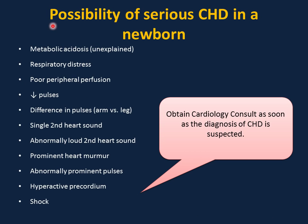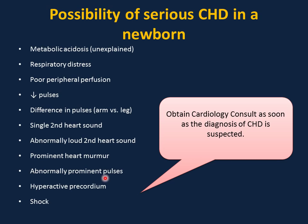Clinical findings and red flags suggesting the possibility of serious congenital heart defect in a newborn include: unexplained metabolic acidosis, respiratory distress, poor peripheral perfusion, decreased pulses, difference in pulses between arm and leg (as in coarctation of aorta), single second heart sound (as in transposition of great arteries), abnormally loud second heart sound, prominent heart murmur, abnormally prominent pulses, hyperactive precordium, and shock.